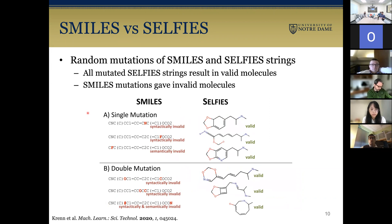Random mutations of SMILES and SELFIES strings were tested. The results show that all mutated SELFIES strings remained valid, while none of the mutated SMILES strings were valid. Adding random invalid characters to a SMILES string gives an invalid molecule, whereas with SELFIES, it will always give a valid molecule no matter what.